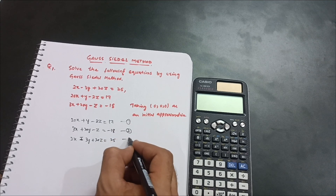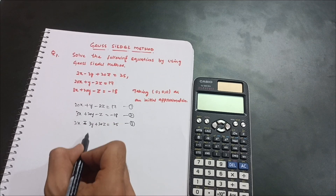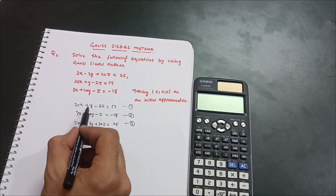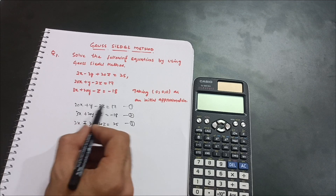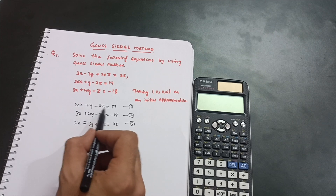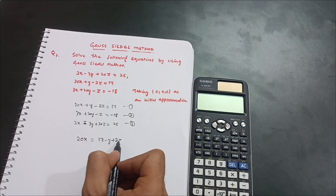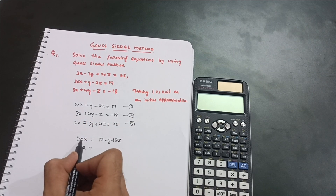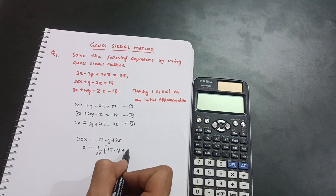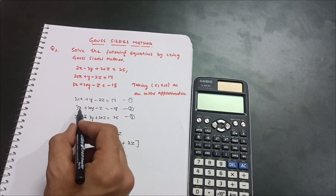Name the equations 1, 2, and 3. For equation 1, rearrange in terms of x: 20x = 17 − y + 2z. Transposing y and −2z to the right-hand side gives x = (1/20)(17 − y + 2z). This is your first equation.